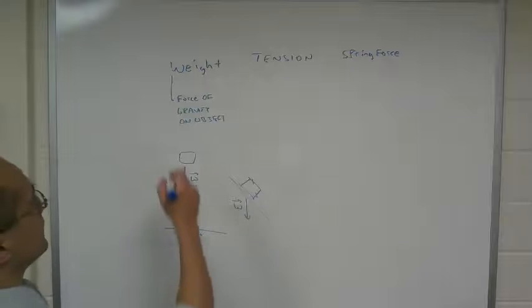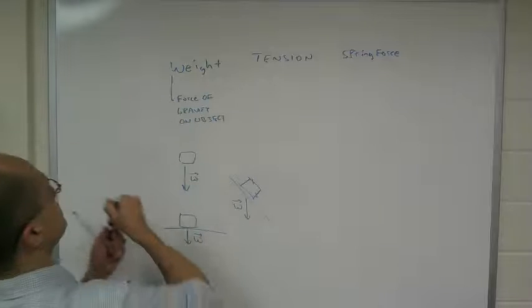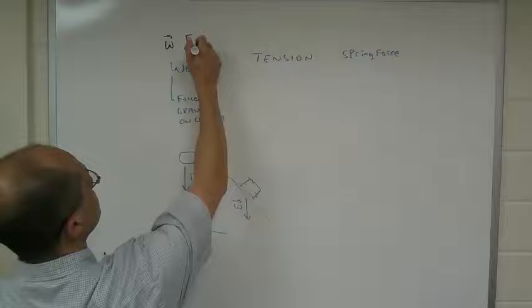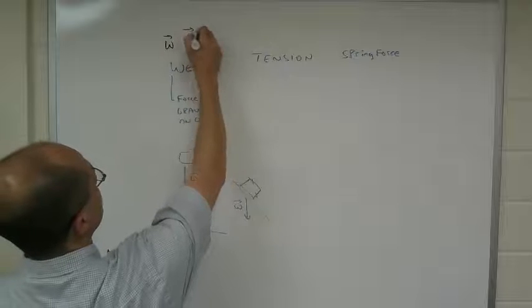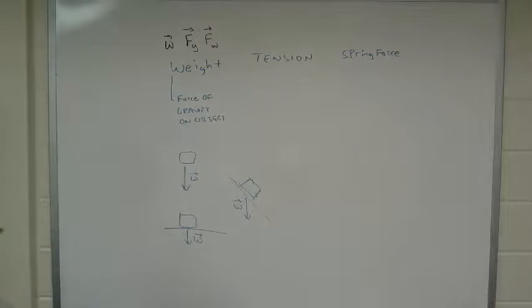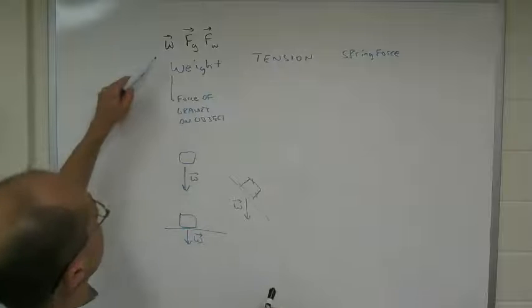Weight. We give it the symbol W, or sometimes you'll see FG or FW. So those are usually the general symbols that you'll see with weight. Your book uses the W.